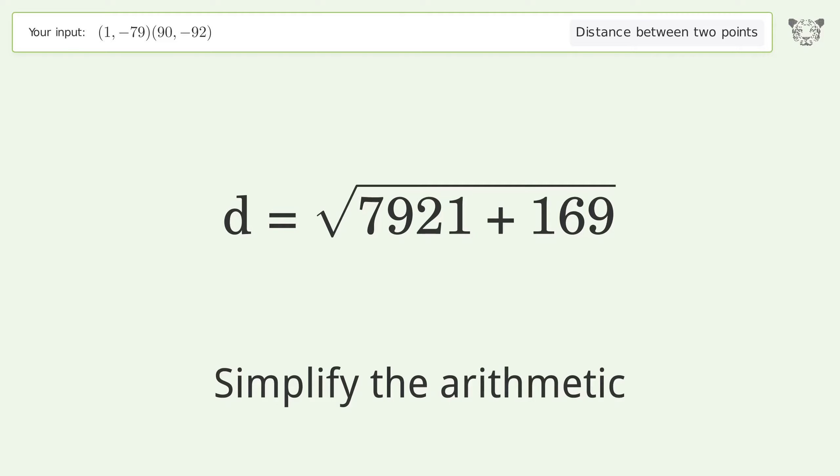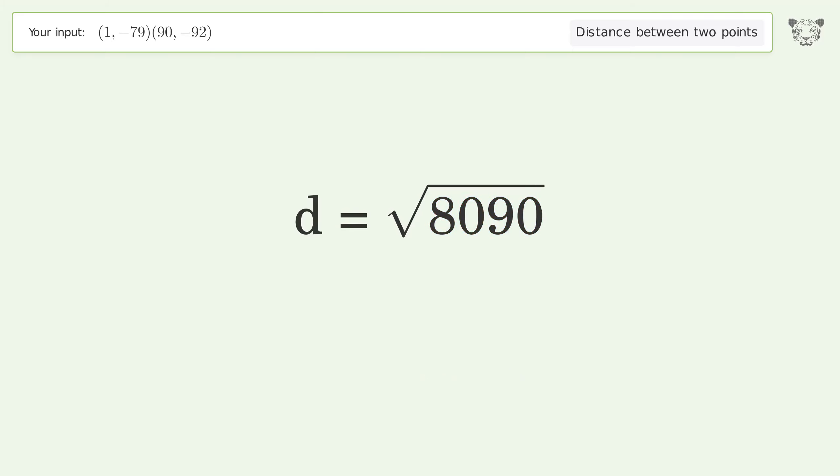Simplify the arithmetic. And so the distance between the two points is the square root of 8090, or 89.944.